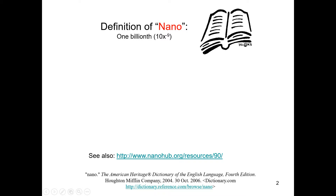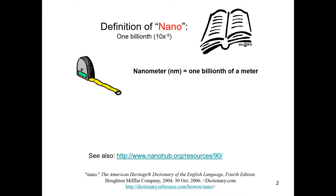Whatever you attach after the prefix nano — whether you attach gram, meter, or anything else — it would mean 10 raised to the power minus 9 of that particular thing. If you attach meter after nano, you put the prefix nano before meter, so it would mean nanometers. If you attach gram after nano, it would mean nanogram, and so on.